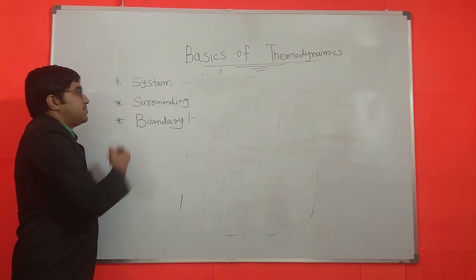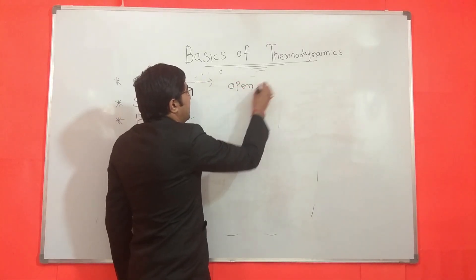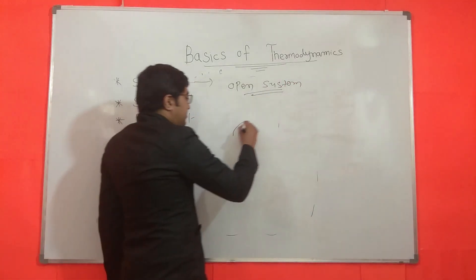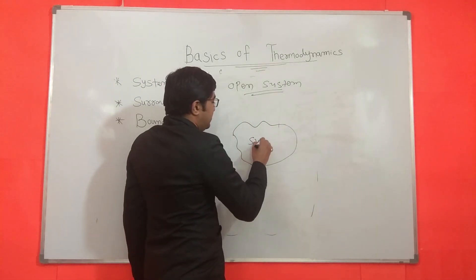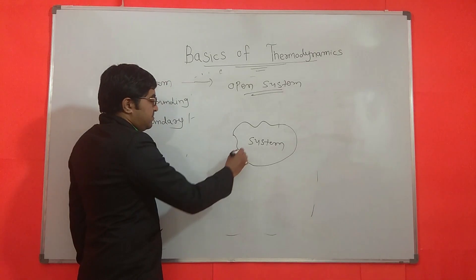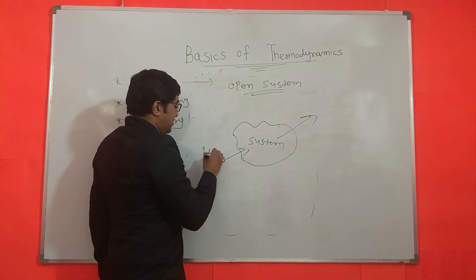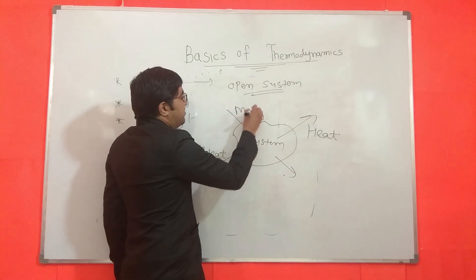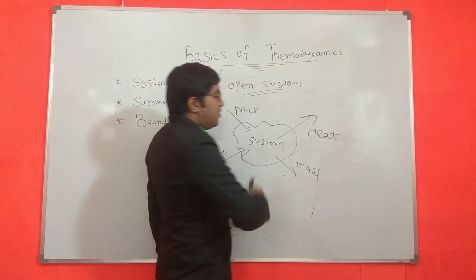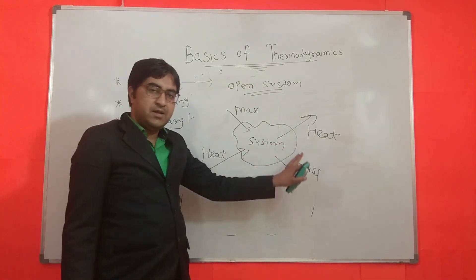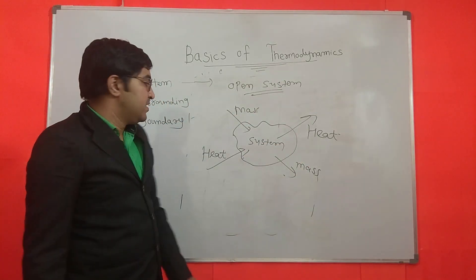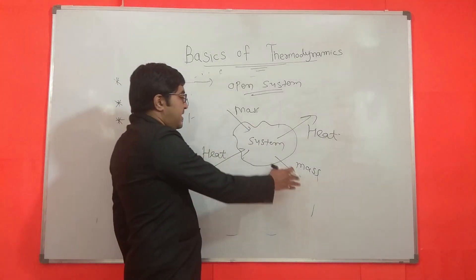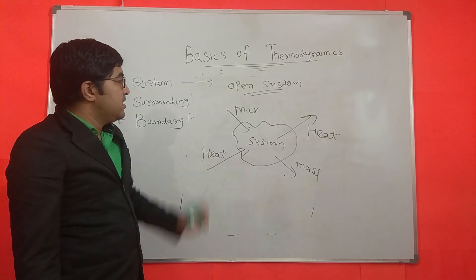There are three types of system. The first one is open system. In an open system, there is a transfer of heat as well as a transfer of mass. So in an open system, heat is transferred and mass is also transferred — there is an inlet and outlet of mass.